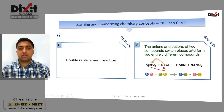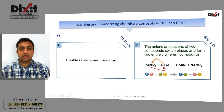Double displacement reaction: the anions and cations of the two compounds switch places and form entirely different compounds. Example: AgNO₃ combines with NaCl to form AgCl and NaNO₃.